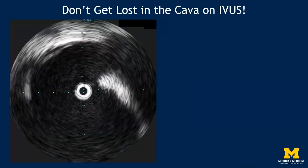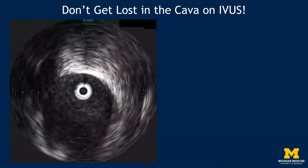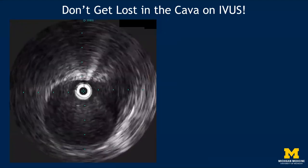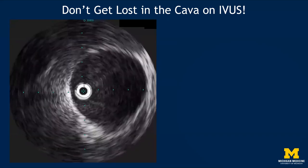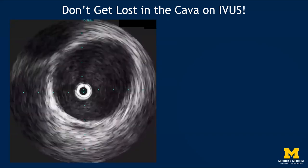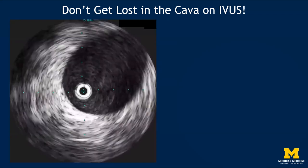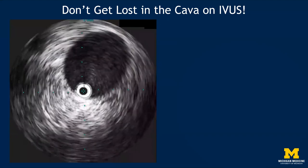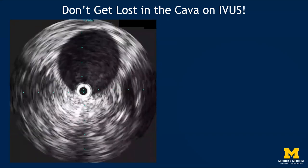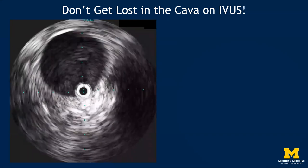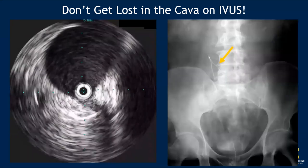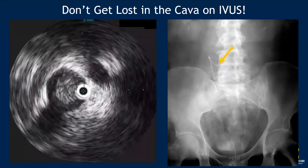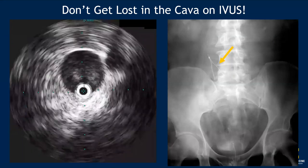Don't get lost in the cave on IVUS. Caval anatomy can seem straightforward, but what happens when you can't find your renal veins to orient you, or you don't have pre-procedural cross-sectional imaging to make sense of the anatomy? Your navigation on IVUS might be off. You've assembled your team to perform a bedside IVC filter placement on a critically ill patient in the ICU who can't be transported easily, and you'll want to avoid suboptimal positioning of the IVC filter. With your knowledge of caval anatomy, you can also help with special scenarios like placing a suprarenal IVC filter in a pregnant patient using only IVUS.